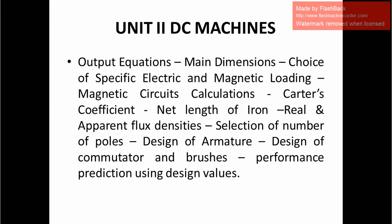The magnetic circuit calculations cover how the MMF is developed. There are four different categories considered, including the carter coefficient, net length of iron, and real and apparent flux density. Then the pole selection procedure is covered — the basic criteria for selecting the poles while designing DC machines.